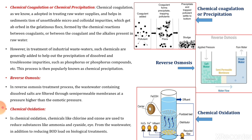In chemical oxidation, effluent is entered from the bottom, then chemicals are added, and the treated effluent as a supernatant is taken out from the tank. Fluidized beds laden with chlorine and ozone come in intimate contact with the wastewater and thereby cause the oxidation of the chemicals.